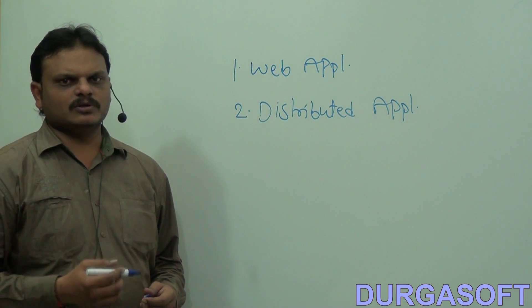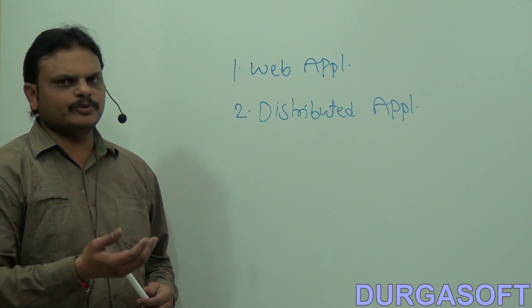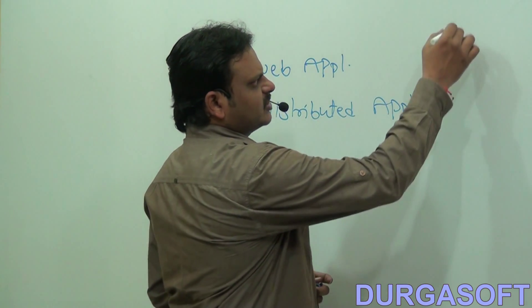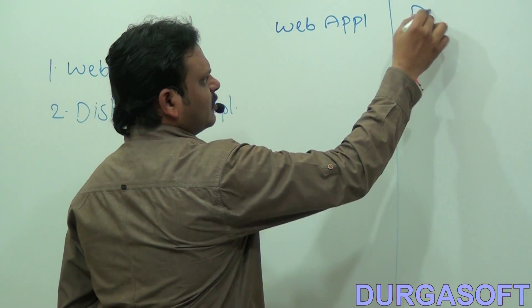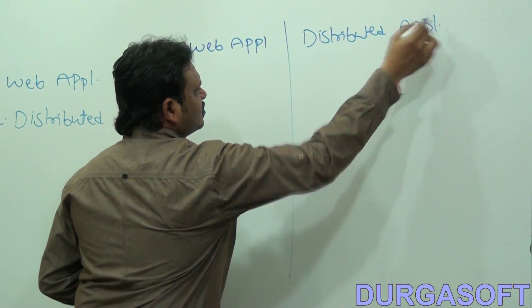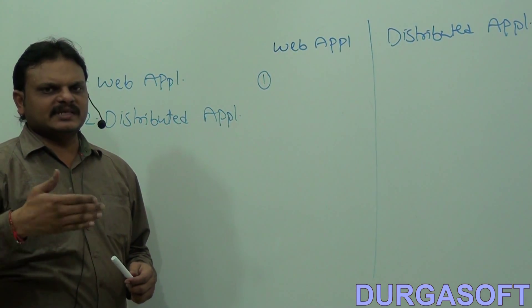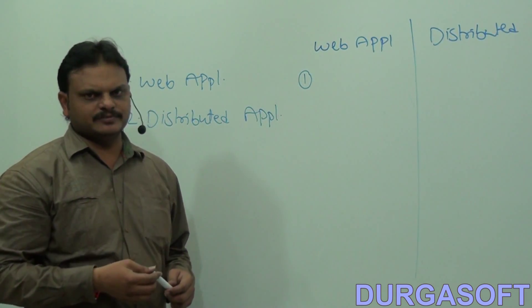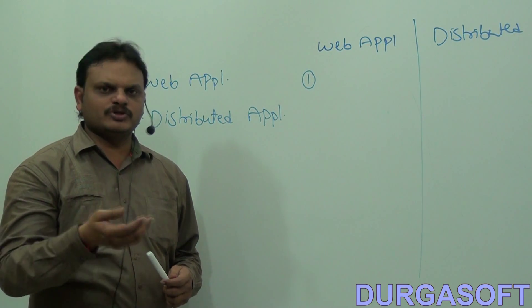One question will be raised: what exactly is the difference between a web application and a distributed application? There are a number of differences. The first difference is that a web application is a subset of distributed applications — that means a web application is one type of distributed application, but some differences are still available.